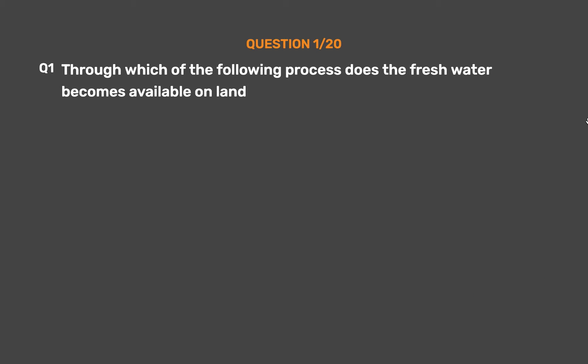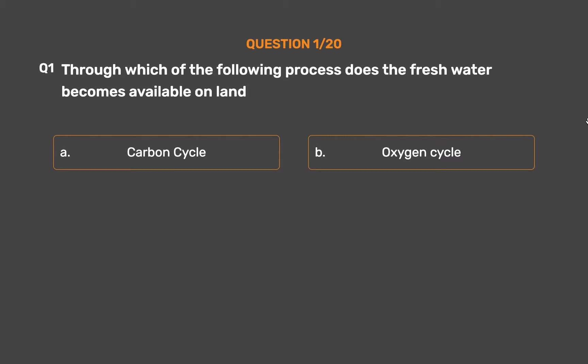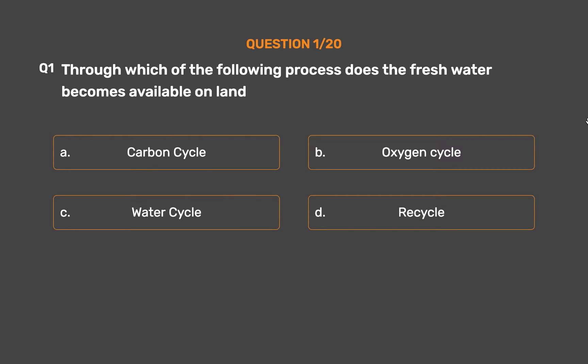Question No. 1. Through which of the following processes does fresh water become available on land? Option A: Carbon cycle. Option B: Oxygen cycle. Option C: Water cycle. Option D: Recycle.